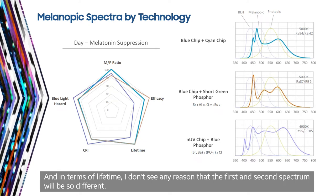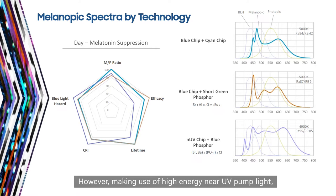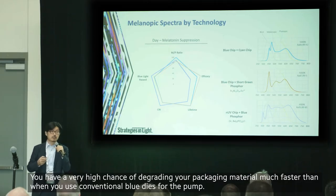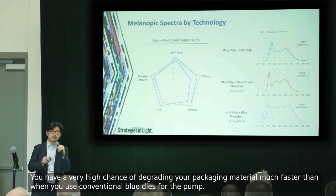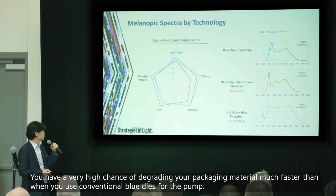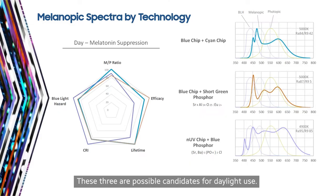I don't see any reason that the first and second spectrum will be so different in terms of light lifetime. However, making use of high-energy near-UV pump light gives a very high chance of degrading your packaging material much faster than when you use conventional blue dyes for the pump. These three are possible candidates for daylight use.